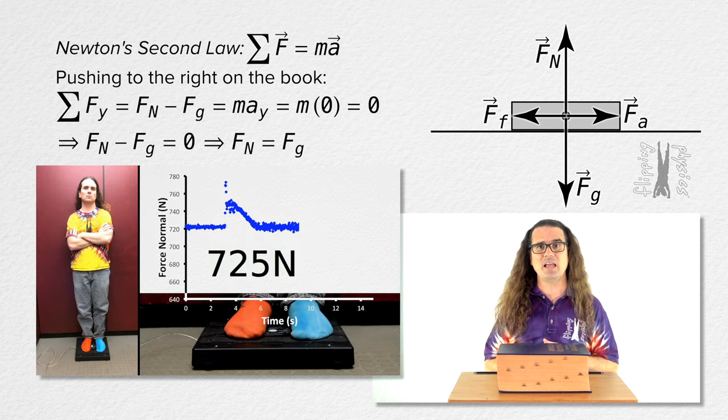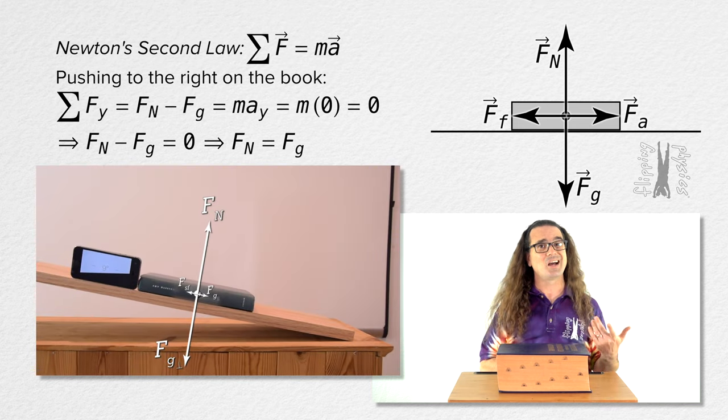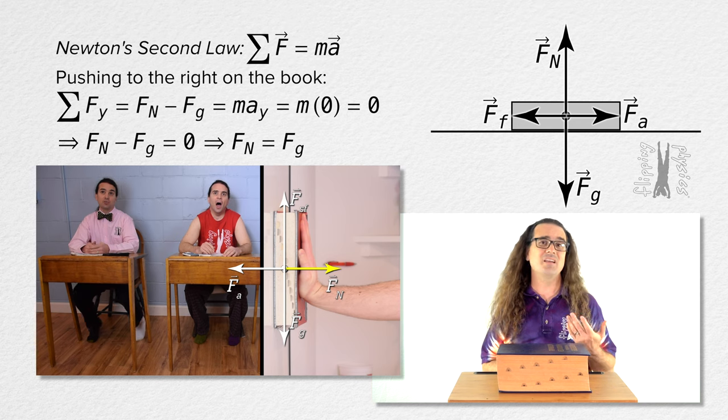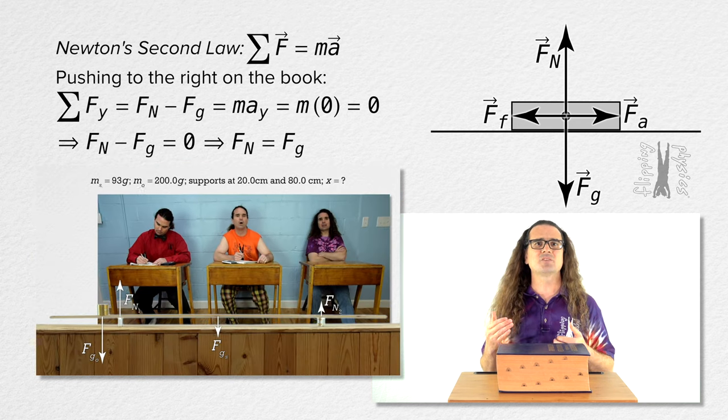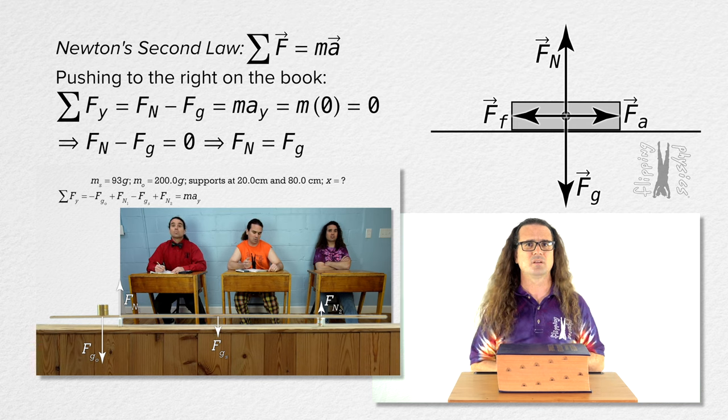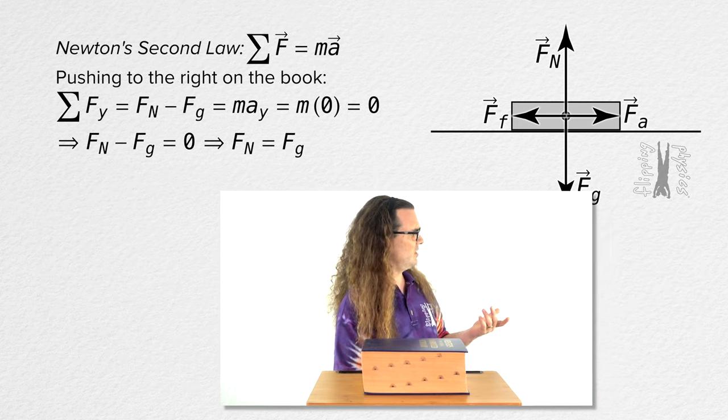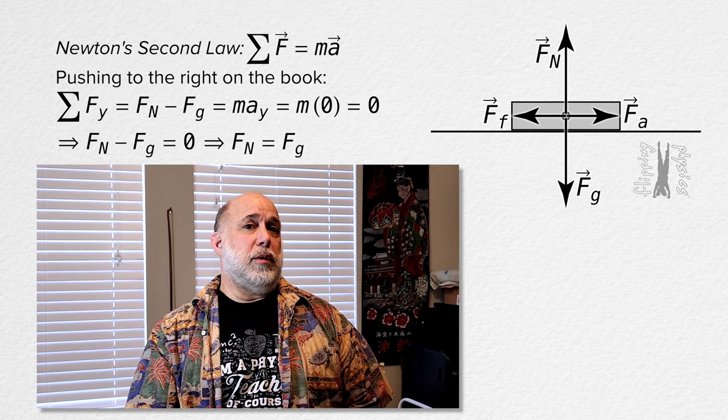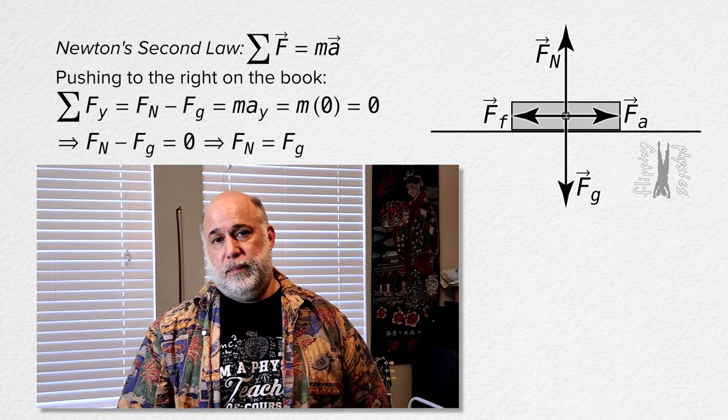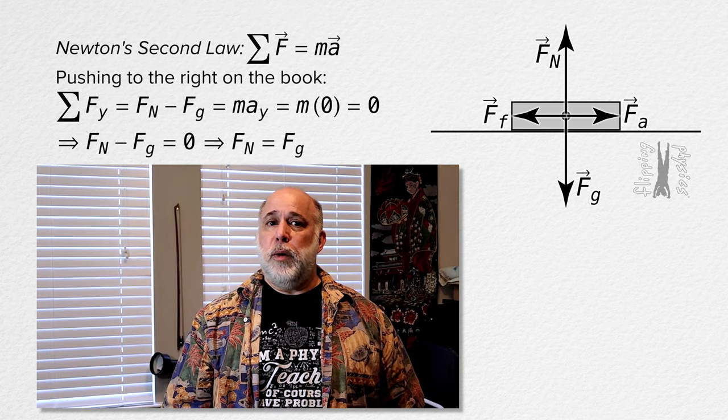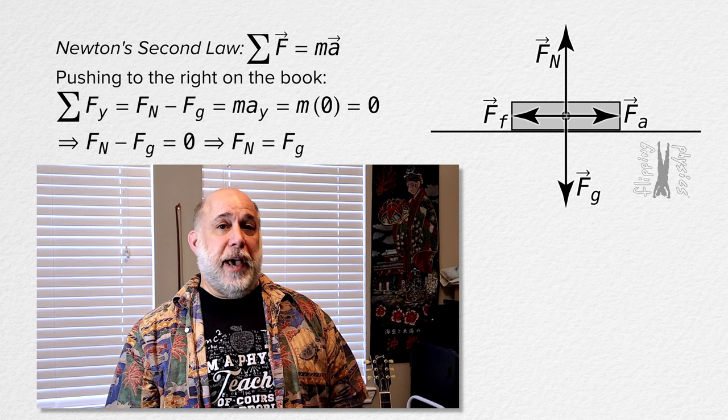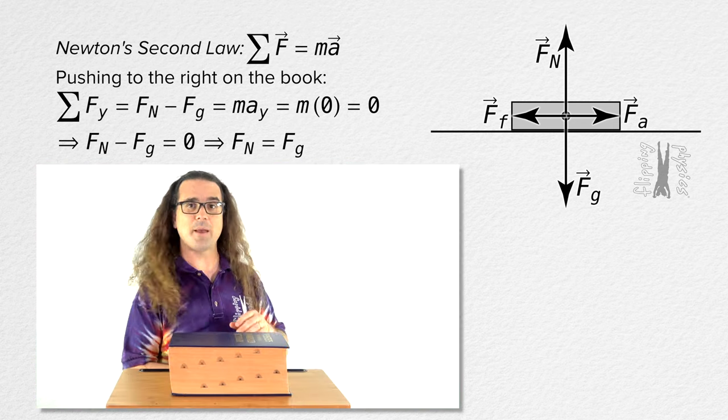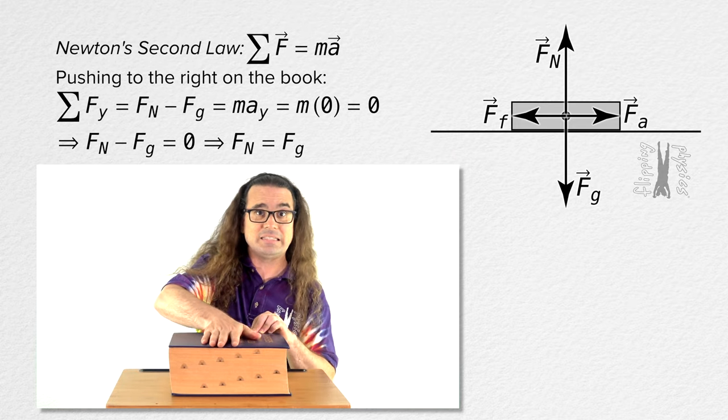Uh, Mr. P? Yes, Dr. Jasana? There is a simple example you can show with that book where the normal force and the force of gravity are not equal in magnitude. I agree. Would you like to tell us? Sure. If instead of pushing to the right in the book, you push down in the book, you'll increase the normal force acting on the book. That is absolutely true and easy to demonstrate.